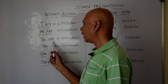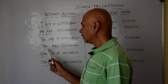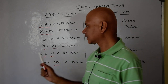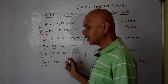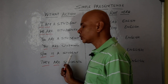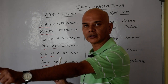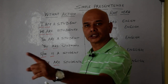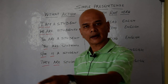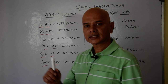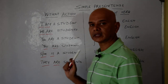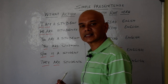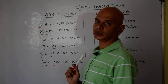Second person plural also uses 'you are': you are students. Third person singular: he is a student, she is a student. Ram is a student, Sita is a student — use 'is' with third person singular. Third person plural: they are students.